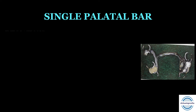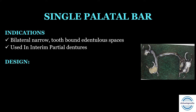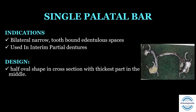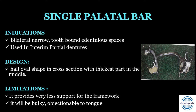First is the single palatal bar. As seen in the picture, it is a single bar joining one side of the components to the other, with minimal coverage on the palate. Its indications are mainly bilateral narrow tooth-bounded edentulous spaces, like Kennedy's class 3 and class 3 modification 1 cases, and also in interim partial dentures. Its design is half-oval in cross-section with the thickest part in the middle. Limitations: it provides very less support — more coverage means more support, less palatal coverage means less support, so it gives the least support of all. Second, it will be bulky and objectionable to the tongue because it is a half-oval bar.